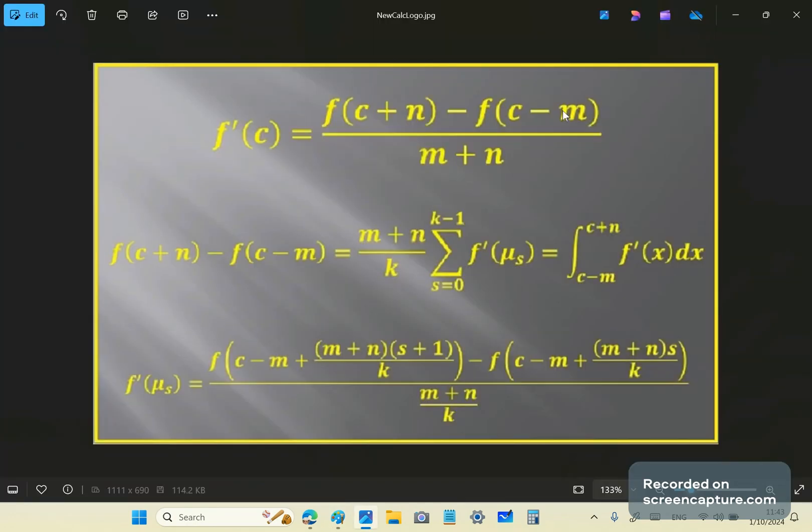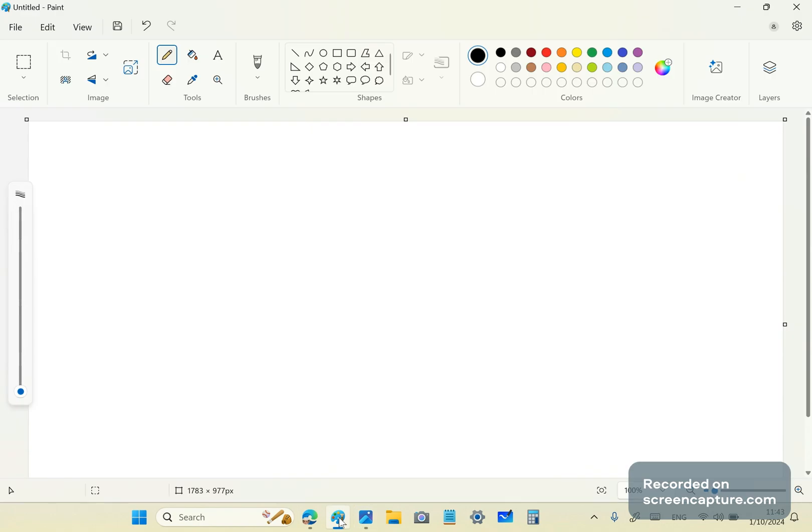The derivative definition is given by what you see over here in front of you. And what this means is very simply this, that if you have a curve like that, and a tangent line there, let's pretend it's a tangent line like that.